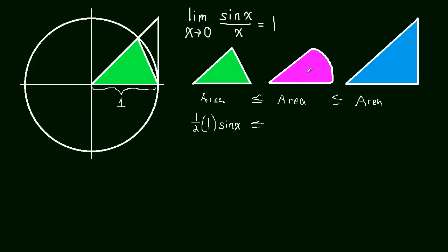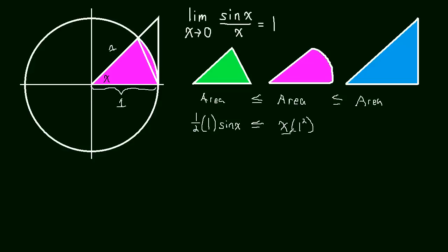What's the area of the sector of a circle? The sector of a circle has an area of the angle times the radius squared divided by 2. Our angle is x and our radius is 1. So radius squared is just 1, and this is really just going to be x times 1 squared over 2, which is x over 2.